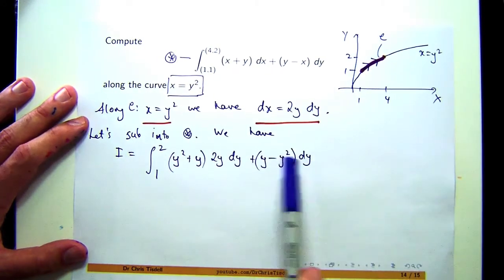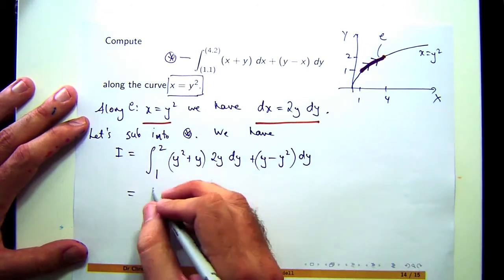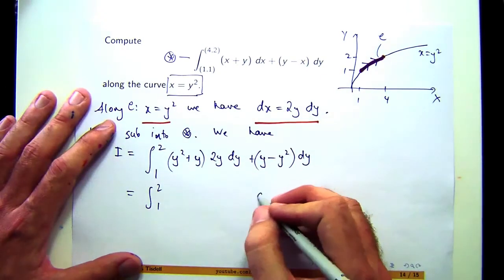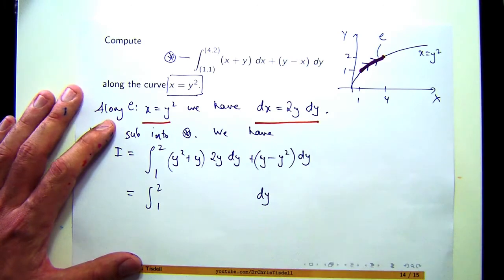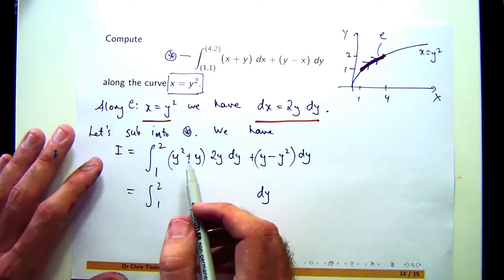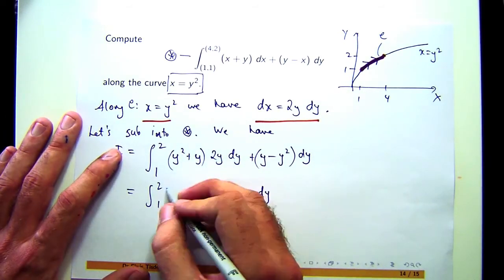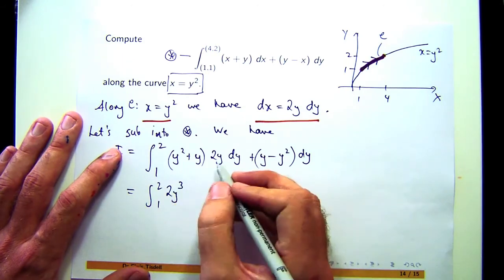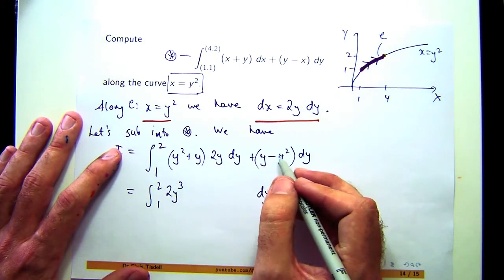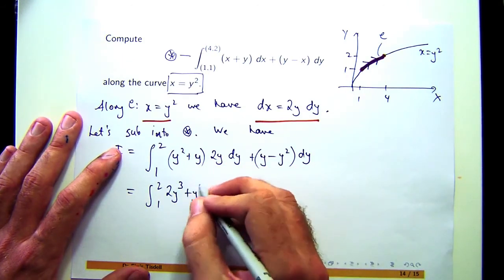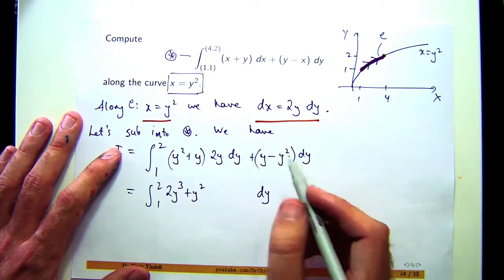Now, I've got two dy's here, so let's just collect them out on the right-hand side. So I'll take the common factor of dy out. What am I going to get left? I'm going to get left with 2y cubed plus 2y squared minus y squared. It's going to be plus y squared, plus y.